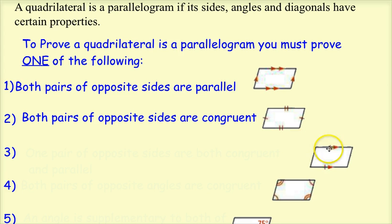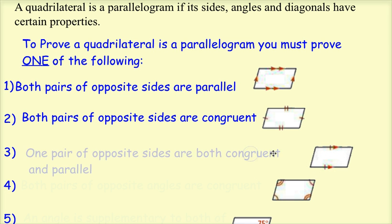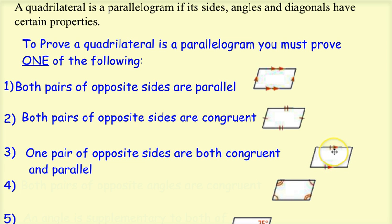The third way: looking at this picture, I see the top line is congruent to the bottom line, and the top line is parallel to the bottom line, but I don't know anything about the left and right sides. So if one pair of opposite sides are both congruent and parallel, that's another way to prove it's a parallelogram.